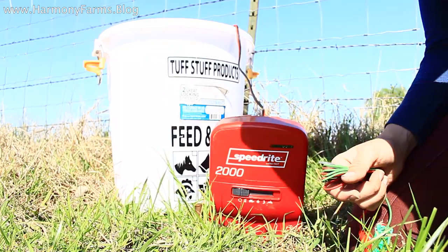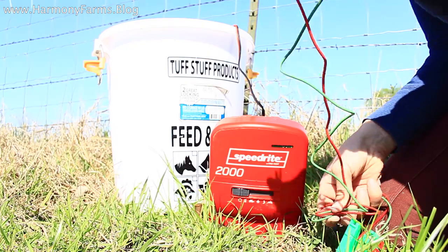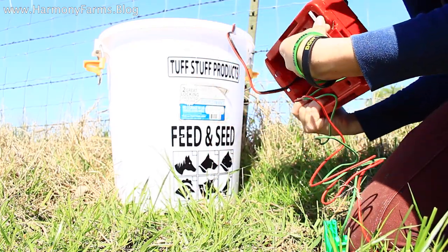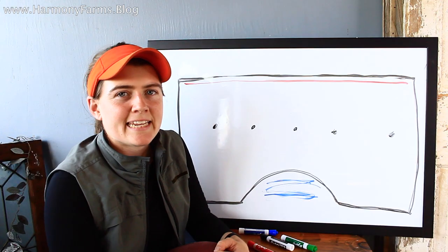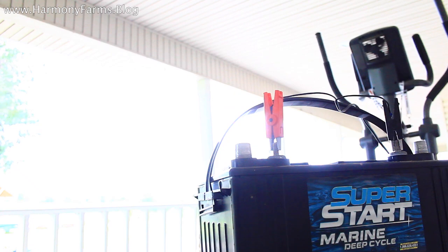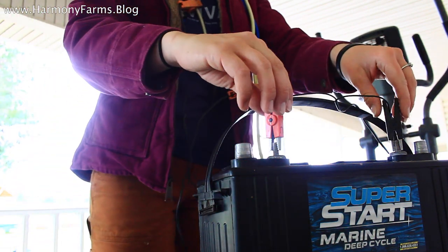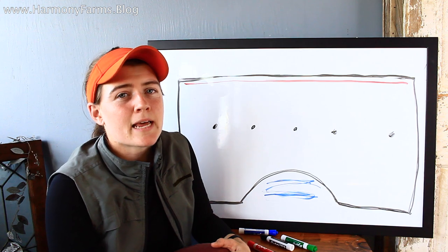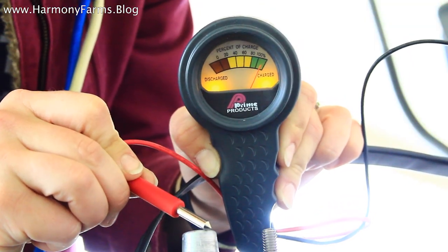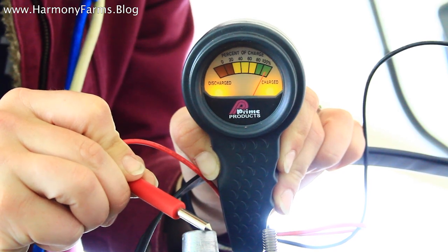I am using a Speed Right two-joule charger with leads on it that can connect to a 12-volt battery to gather that charge that it needs. The battery is a 12-volt marine deep cycle battery. Marine meaning it is waterproof, and deep cycle meaning I can draw the charge down pretty low without actually damaging the battery.